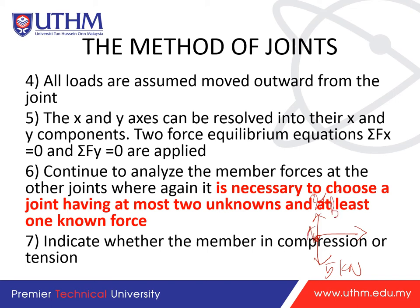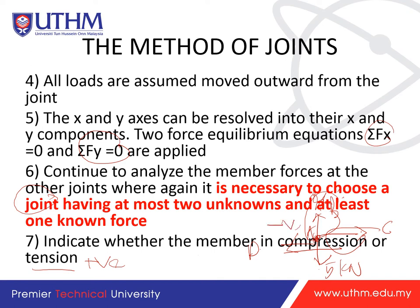Say you have members a, b, c — you are only allowed two unknowns. If you have another unknown d, you don't choose that joint because you'd have three unknowns. With three unknowns you cannot solve using ΣFx = 0 and ΣFy = 0, since we only have two equations and can only solve up to two unknowns. Normally we start from the support where we already know the reaction forces. We also determine whether the force is in compression or tension: positive values indicate tension and negative values indicate compression.